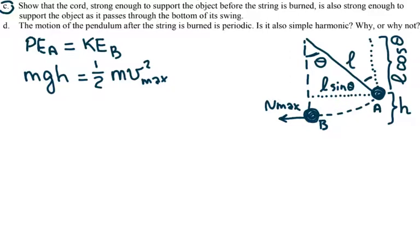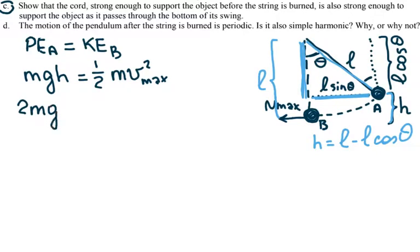My h is, if you look through this triangle, this is your L sine theta and the vertical part is your L cosine theta. So what's left right here for h, this whole length is L, so for h I'm going to write h is equal to L minus L cosine theta.